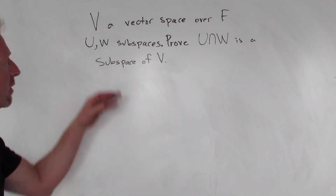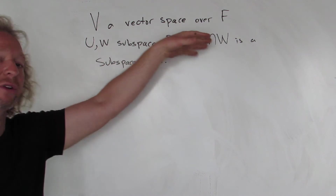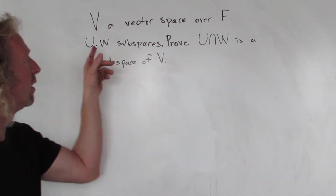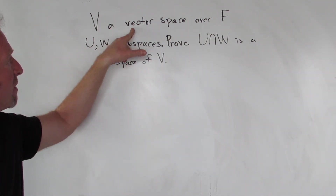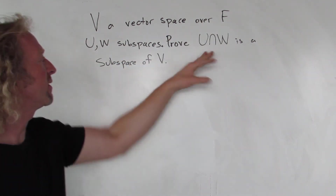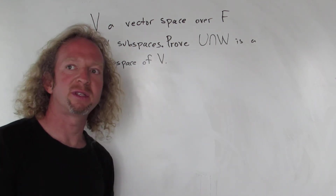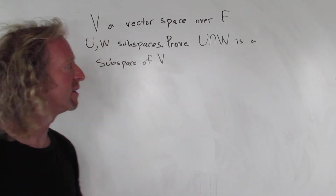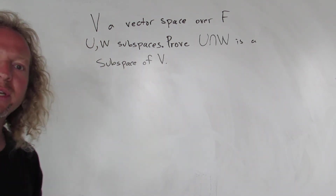Hey YouTube. In this video we have V, a vector space over a field F. We have U and W, which are subspaces of V. We have to prove that the intersection is also a subspace of V. Not a very difficult problem, but let's go through it carefully.